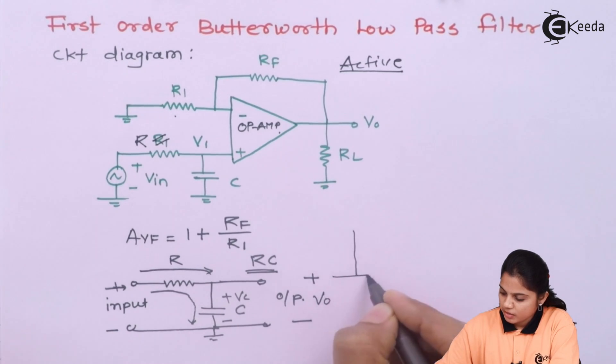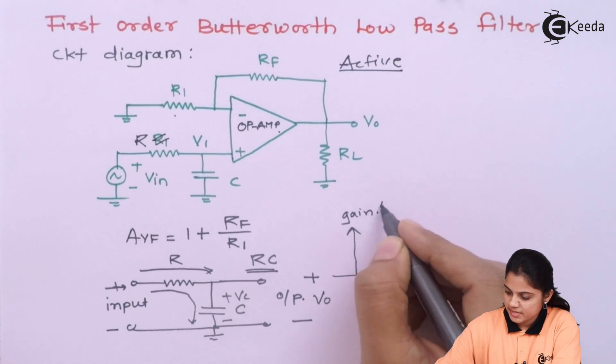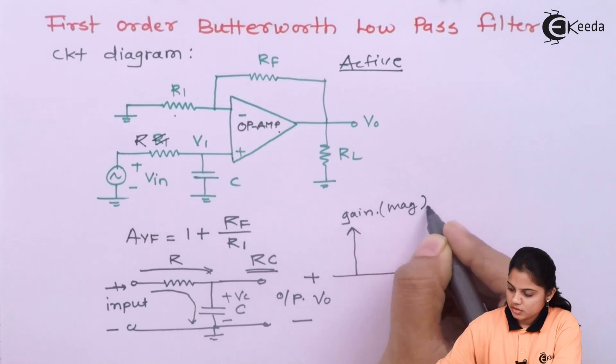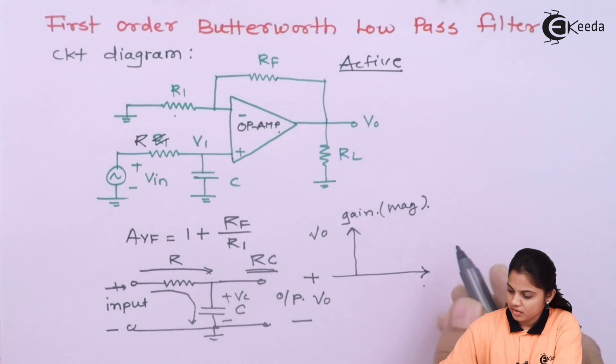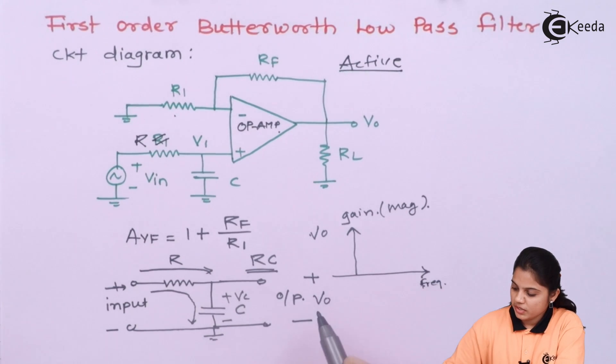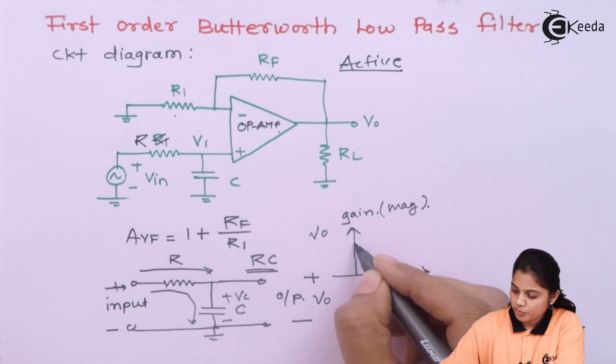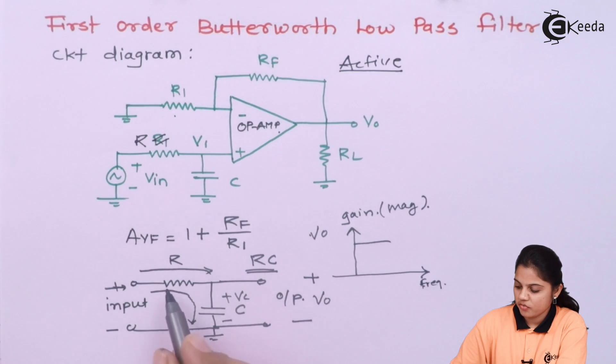Suppose if I draw the magnitude response, that is gain or you can say the magnitude. This magnitude will be V0 and this will be Vin or I can say the frequency. So for lower frequency, what will happen, it will give you the output voltage.